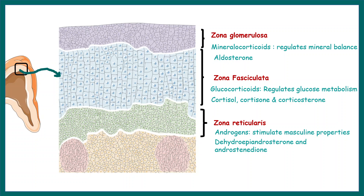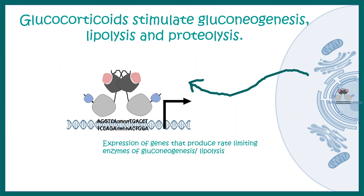Glucocorticoids can stimulate gluconeogenesis, lipolysis, and proteolysis. They are lipid-soluble, so they can pass through the plasma membrane and their receptors are present in the nucleus. These receptors are bound to specific DNA segments called hormone response elements. When the ligand binds to these receptors, it leads to transcriptional activation of genes that regulate gluconeogenesis, lipolysis, and related processes.